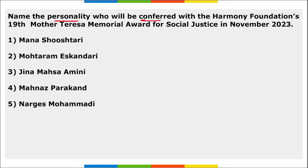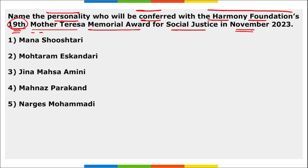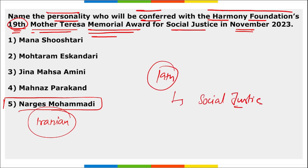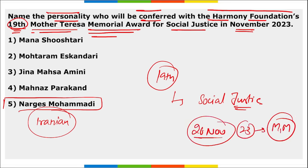Nargis Mohammadi will be conferred with Harmony Foundation's 19th Mother Teresa Memorial Award for Social Justice in November 2023. She is an Iranian woman who was also awarded the Nobel Peace Prize 2023. This 19th edition of the award is in the field of social justice, scheduled on 26th November 2023 in Mumbai, Maharashtra.